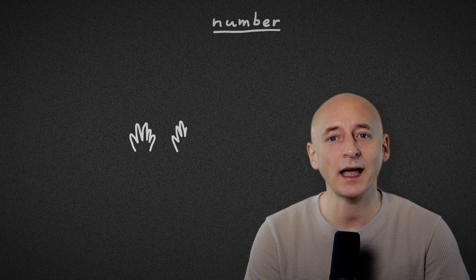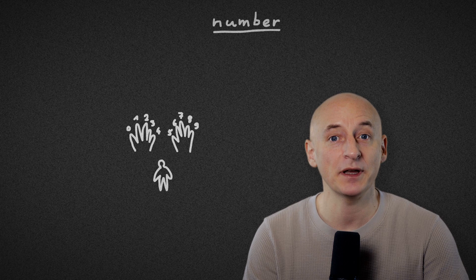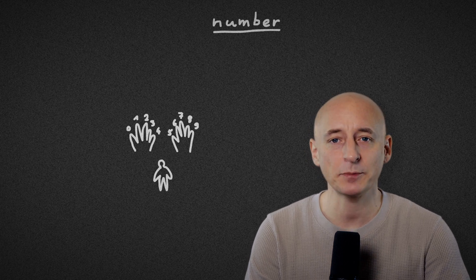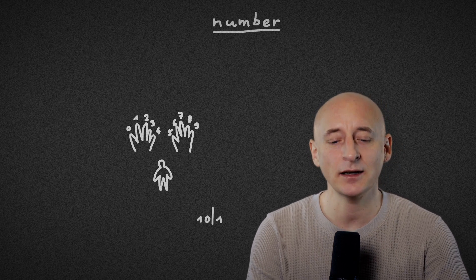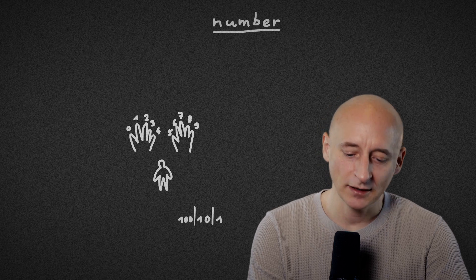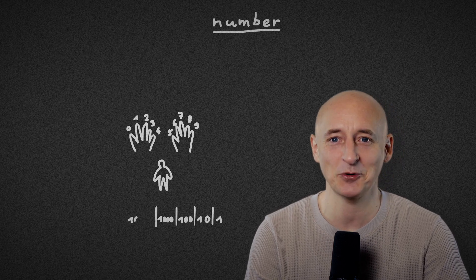Because we have ten fingers, we count with ten digits, from zero to nine. When a number is bigger than nine, we use multiple positions. The first position holds multiples of one, the next – multiples of ten, then ten times ten, then ten times ten times ten, and so on.